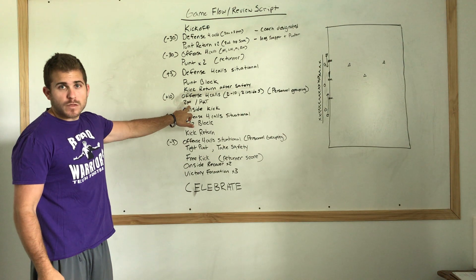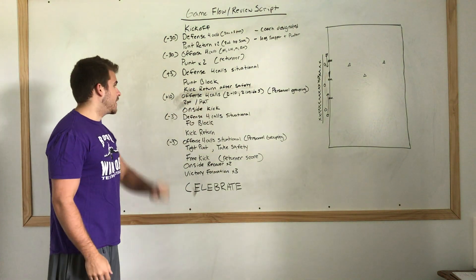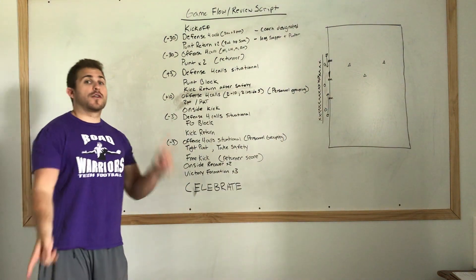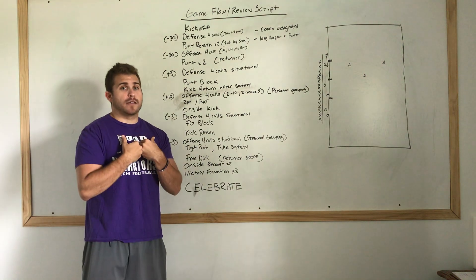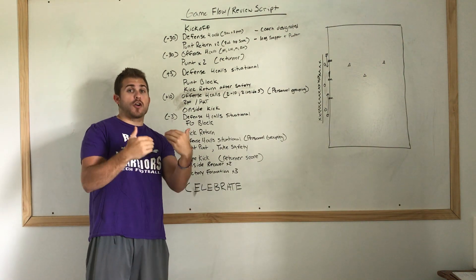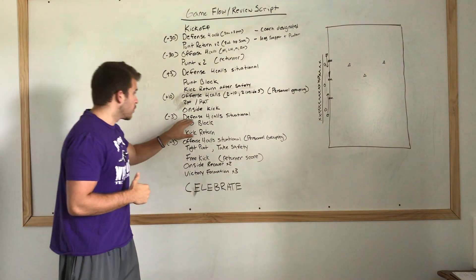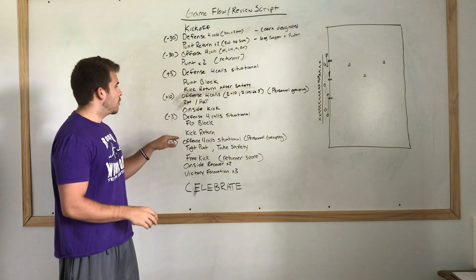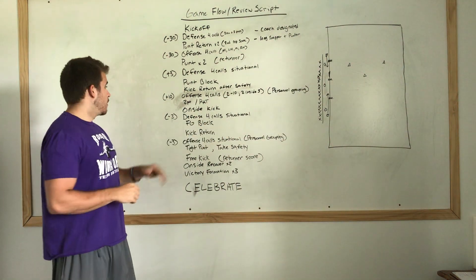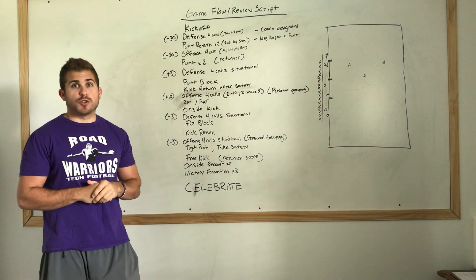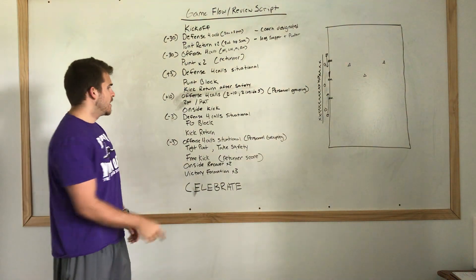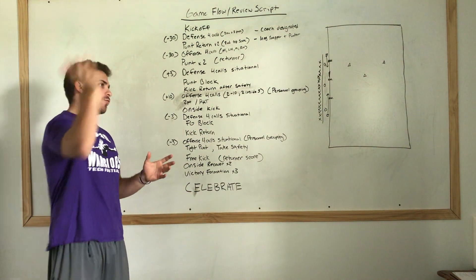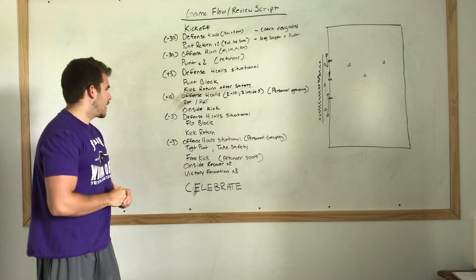Then we'll run a two-point play. We'll run our PAT or field goal team out and kick a PAT. Then our kickoff team comes back out and we will onside kick. Then we flip the field — we'll spot the ball at our own three. Now the defense is on its heels, the offense is about to score on us. We'll get four calls per that situation — whatever you like to be in when you're backed up on defense, on your own three yard line. We'll run our field goal block team out, then kick return — your kicker will kick off and you'll run a kick return.